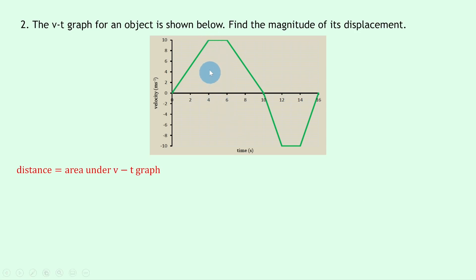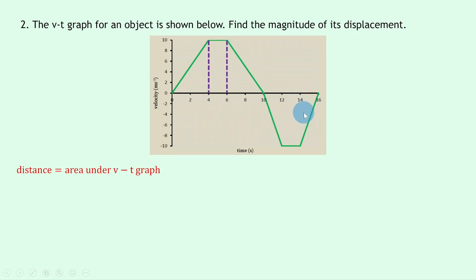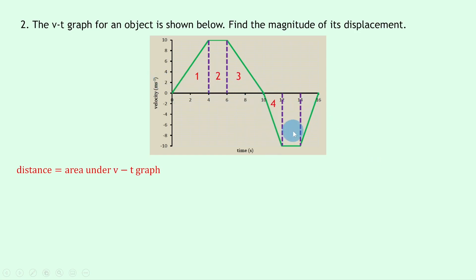First, we have a triangle up to four seconds, so I'll put a line down there to break that up, then a rectangle, then a triangle — adding another line lets us see those shapes clearly. Similarly, we do the same for the second part of the motion, splitting it into triangle, rectangle, and triangle. Now I've got six shapes altogether and I'm going to label them one through six to keep us right.